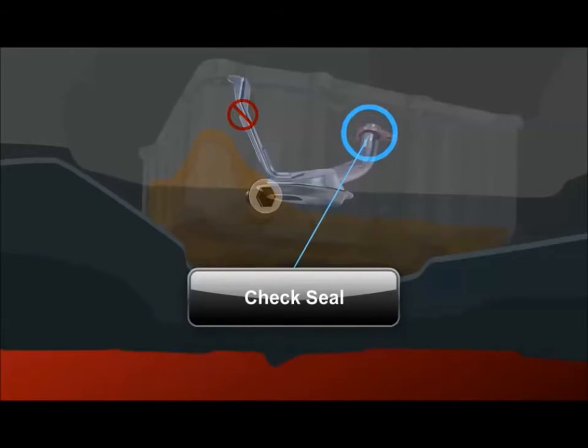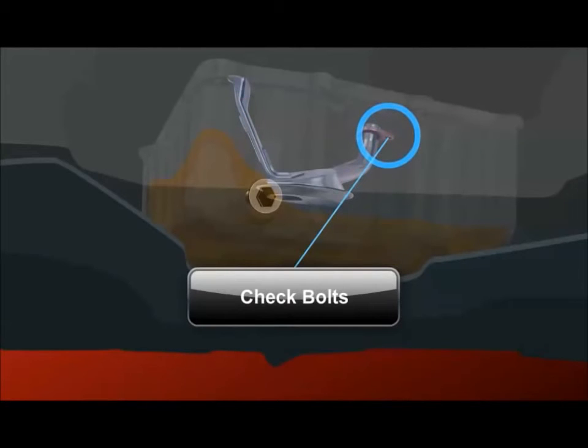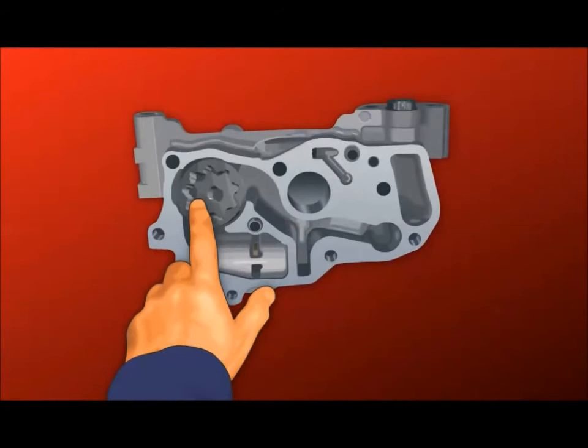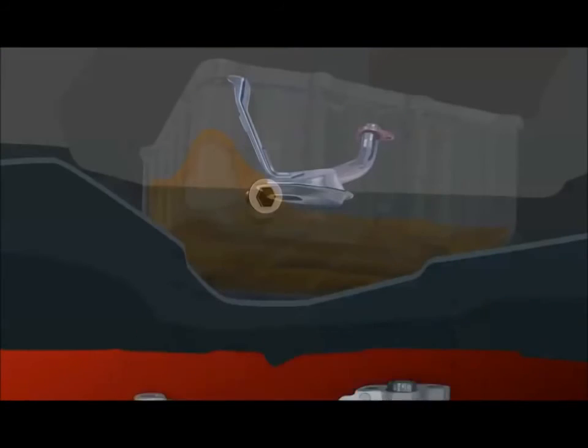To prevent suction side problems during engine assembly, make sure the pickup is properly sealed, mounted tightly, and the pump rotors have been primed with a thin coat of oil. These steps will provide a tight seal on the oil pump suction side, preventing oil starvation at startup.